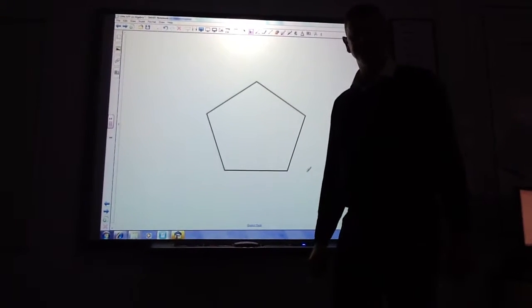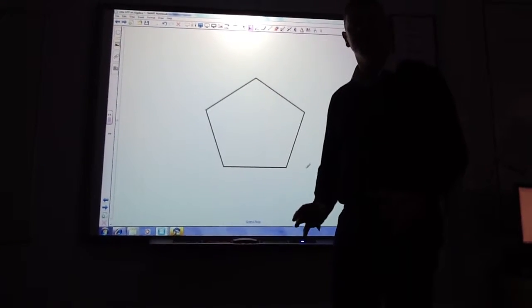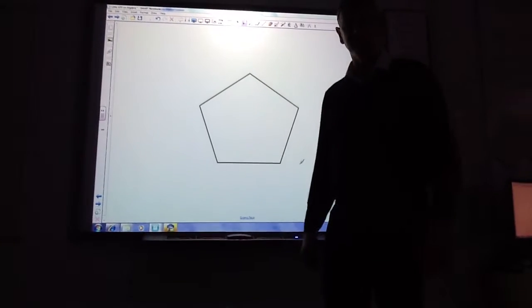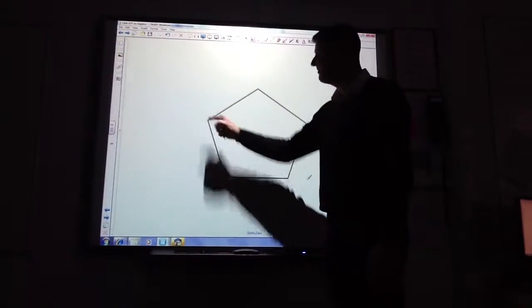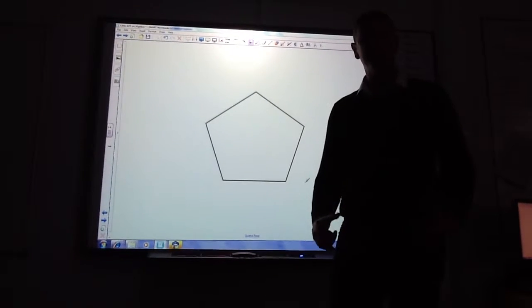This is a polygon. Any shape that's got more than four sides is a polygon. This one happens to have one, two, three, four, five sides, so its actual name is a pentagon.